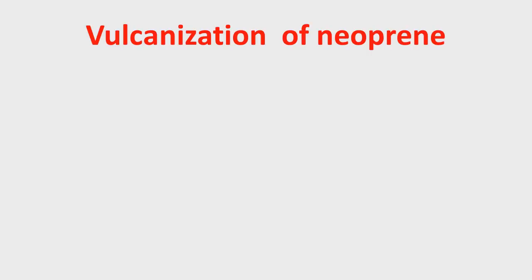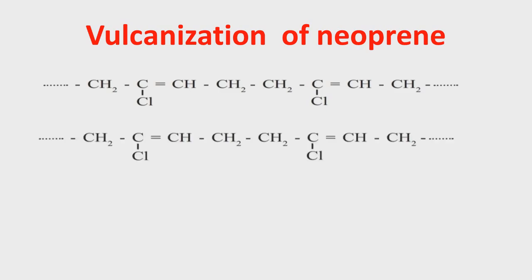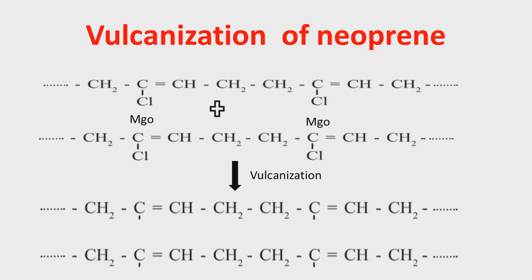Vulcanization of neoprene is carried out in the presence of metal oxide rather than sulfur compounds. The structure of neoprene (polychloroprene) is treated with magnesium oxide. In this reaction, chlorine leaves along with magnesium, and crosslinks are formed through oxygen. This gives the vulcanized structure of neoprene.